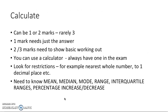We then move on to calculate. It can be one or two marks. Rarely three, but sometimes it can be. If it's for one mark, you just need to give the answer. If it's worth two or three marks, you need to show your basic working out. You can use a calculator. So always take one in the exam. And make sure you very carefully look for restrictions. Many people lose marks for not looking at things like to one decimal place or to the nearest whole number. And you've got to know your basic maths. Mean, median, mode, range, interquartile ranges. And how to work out percentage increase and decrease. So go back through your maths revision and your geography revision. Make sure you know those things.